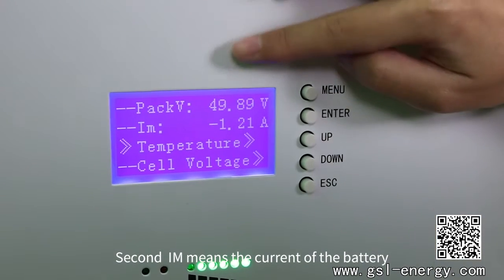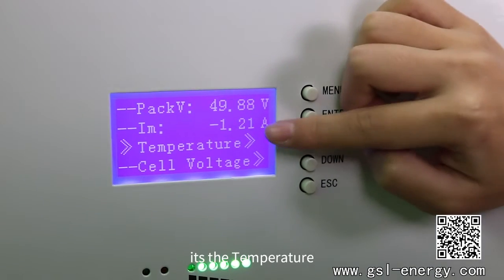Second, IM means the current of the battery. Next one is the temperature.